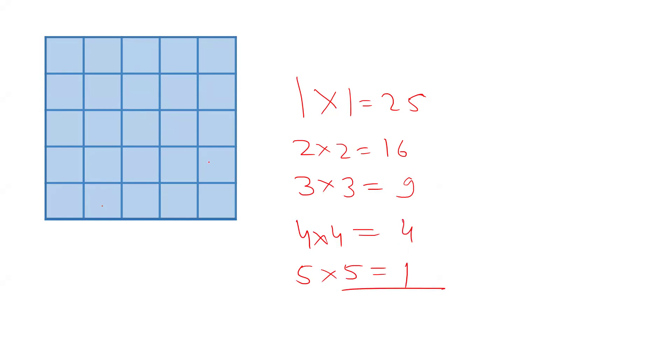4 by 4 there are 4 squares. If I count all these numbers: 25 plus 16 plus 9 plus 4 plus 1 equals 55. There are 55 squares total.